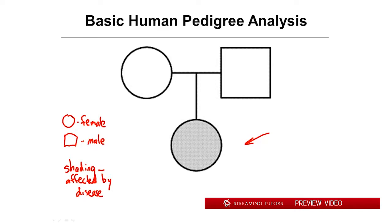This is often done for disease traits because we want to find out, for example, whether someone has cystic fibrosis — clearly a genetic disease because it runs in families. One of the fundamental things we need to know is whether it's inherited in a dominant or recessive fashion. Shading means affected by the disease. What we're saying here is that the two parents were not affected by the disease and the child — who happens to be a girl — was affected. If you were a genetic counselor, a couple would come to you and say we're perfectly healthy but our daughter has this genetic disease.